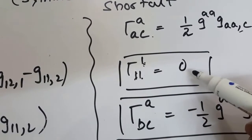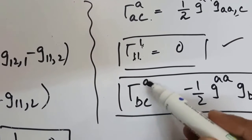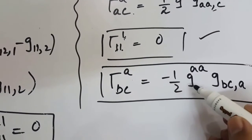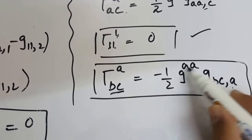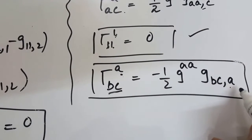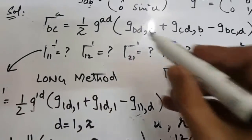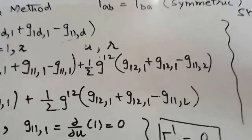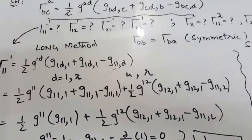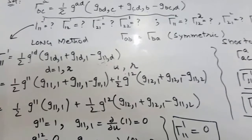If all three indices A, B, C are different, the shortcut formula uses half of G^{AA} times the partial derivative of G_{BC} with respect to A, with a negative sign. In orthogonal systems this lengthy formula reduces to a very short one. I'll leave the other Christoffel symbols for you to calculate. Please subscribe, like, and comment — sorry for my bad English. That's all!